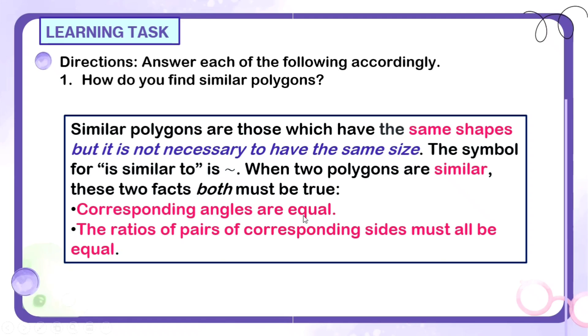Corresponding angles are equal, and the ratios of pairs of corresponding sides must all be equal. So para masabi natin similar polygons, hindi naman kailangan na pareho yung kanyang sukat, yung size niya. Basta same yung shape, at kailangan meron itong dalawang to. Kailangan yung kanyang corresponding angles are equal, tapos yung ratio ng kanyang corresponding sides must all be equal. So kahit magkaiba ang kanilang size or sukat kung corresponding angles are equal, and kanyang ratios ng corresponding sides ay equal, then we can say that the polygons are similar.